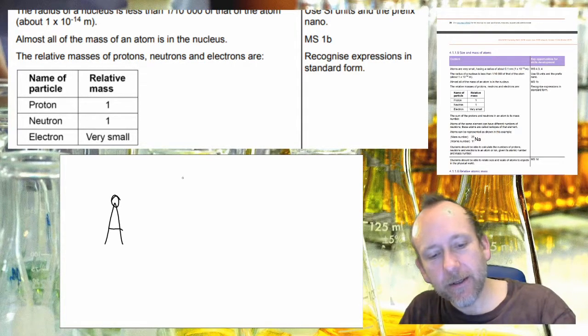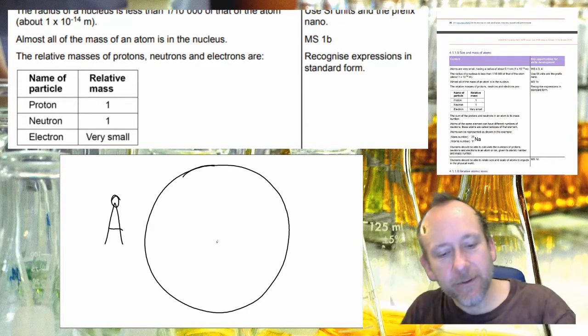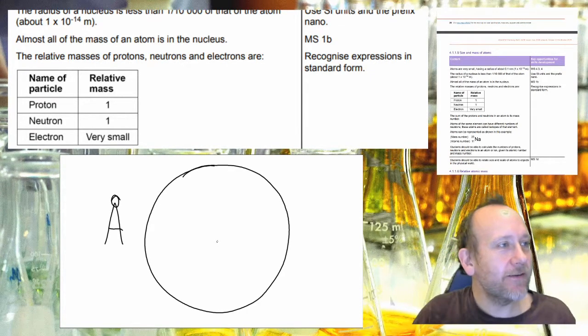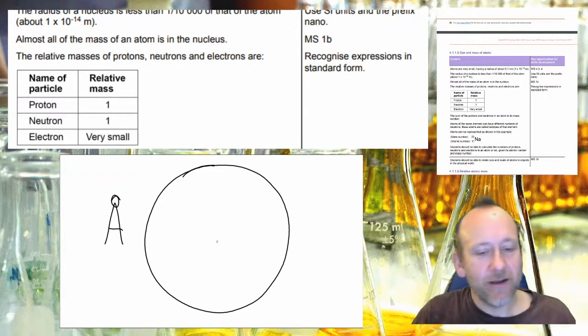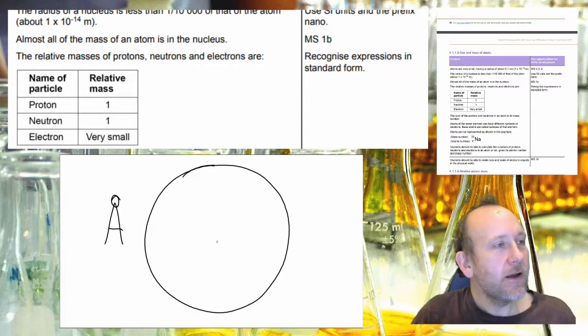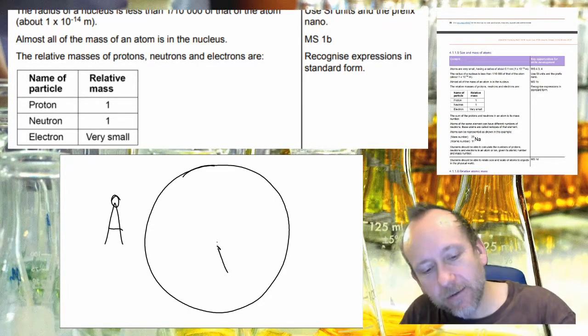So if you've got an atom's radius then the nucleus in the middle takes up less than one ten-thousandth of that size of that radius. Almost all of the mass however is in that tiny little dot there.